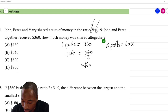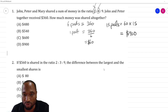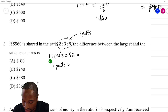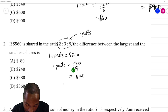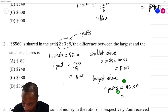560 is shared in the ratio 2:3:9 — find the difference between the largest and smallest shares. Add up all parts: 2 plus 3 plus 9 equals 14 parts. 14 parts equals 560 dollars, so one part equals 560 divided by 14 equals 40 dollars. The smallest share is two parts: 40 times 2 equals 80 dollars. The largest share is nine parts: 40 times 9 equals 360 dollars. The difference is 360 minus 80 equals 280 dollars. Alternatively, nine minus two equals seven parts, and seven times 40 also equals 280.